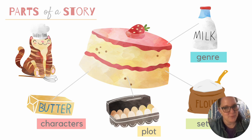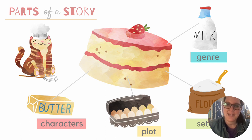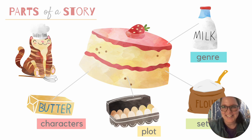So first let's review our four story ingredients. We have genre, setting, plot, and characters. And as we know, we need all four of these ingredients mixed together to make a fantastic story.